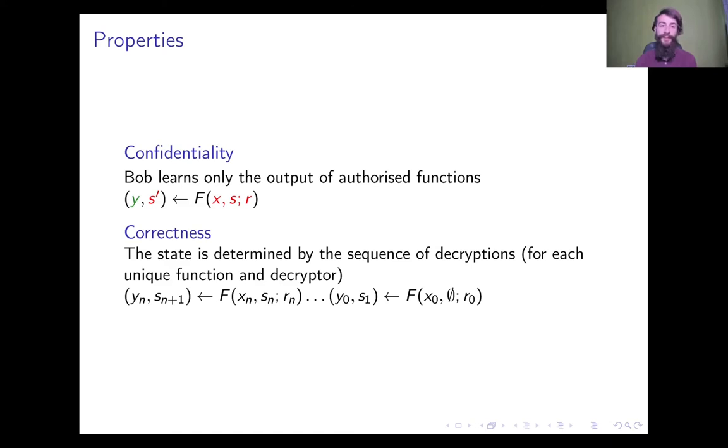The properties for this primitive are confidentiality and correctness. The former entails that Bob, our malicious party, can only learn the output of authorized functions. In particular, it won't be learning the state either before or after the function application, nor the input or the randomness. For correctness, we mean that the state at any point during the computation is determined by the sequence of previous decryptions for that particular function, for that particular instance of Bob. So, the only way for some Bob to influence the value of the state is that of providing different inputs x to its decryption functions.